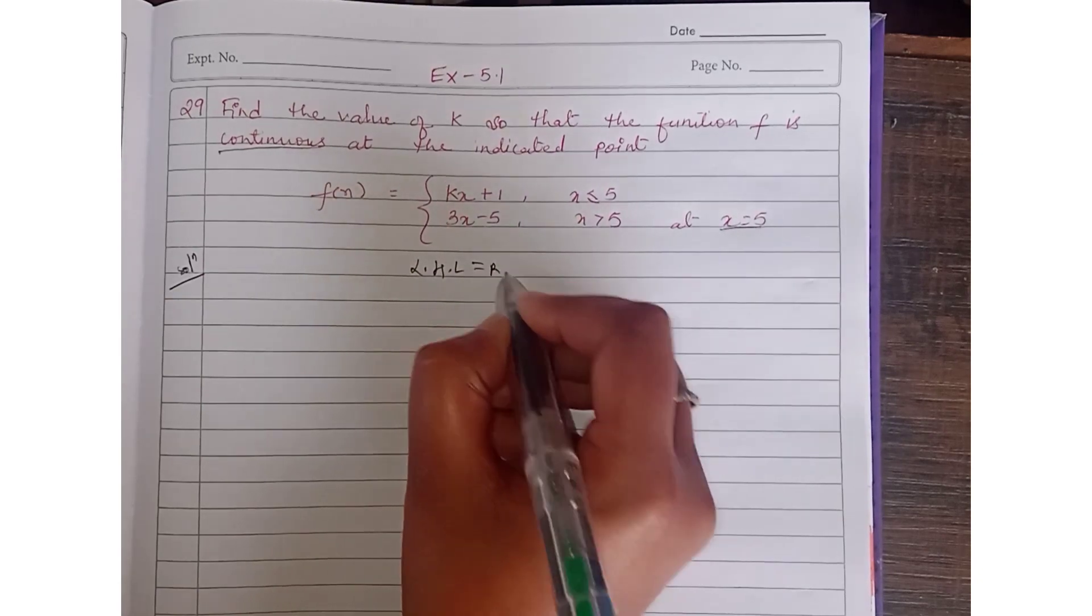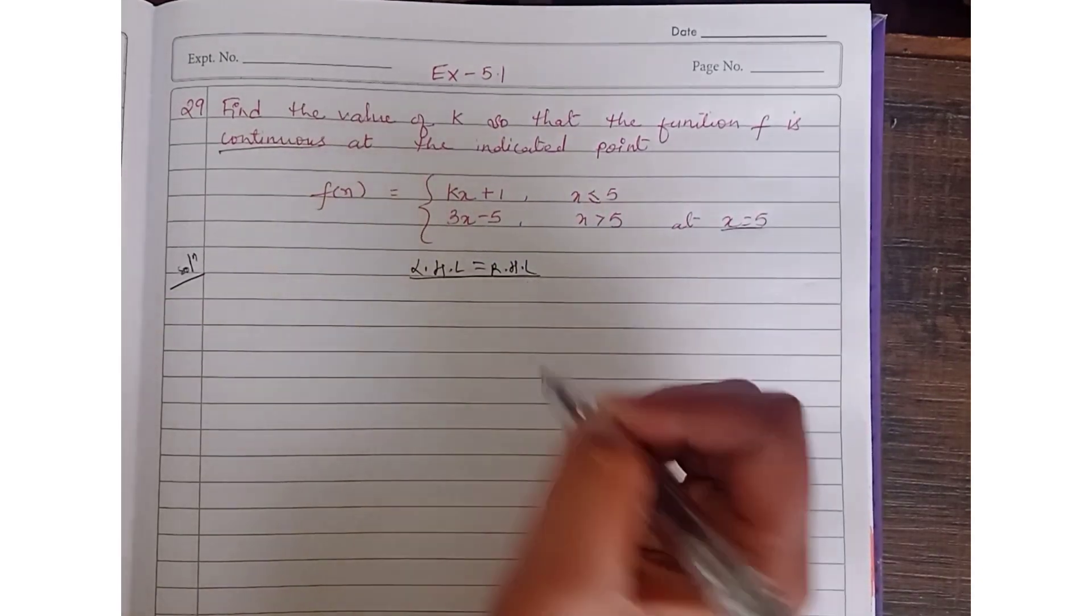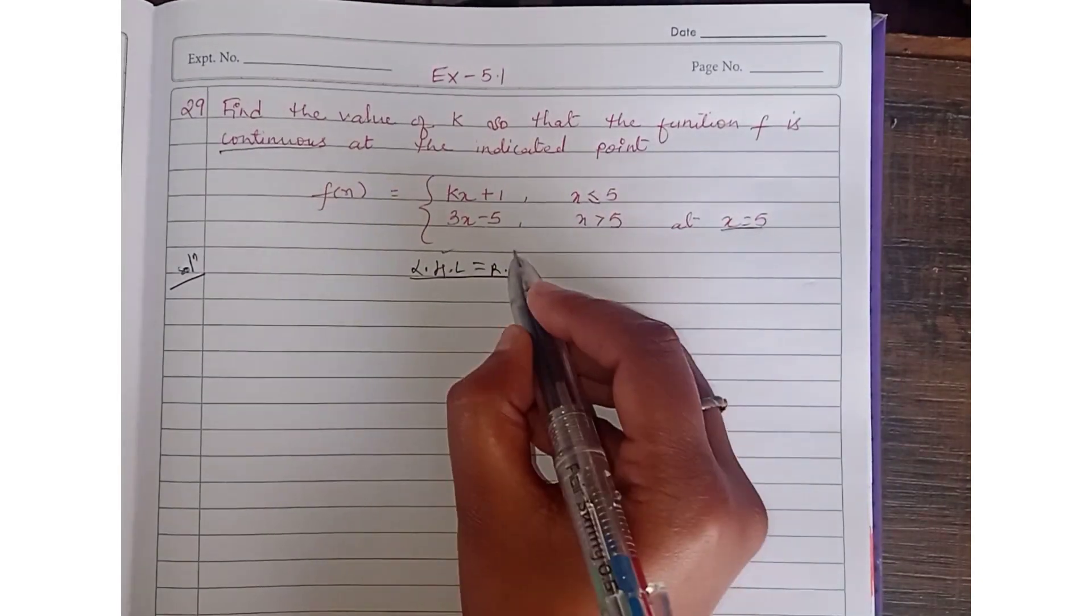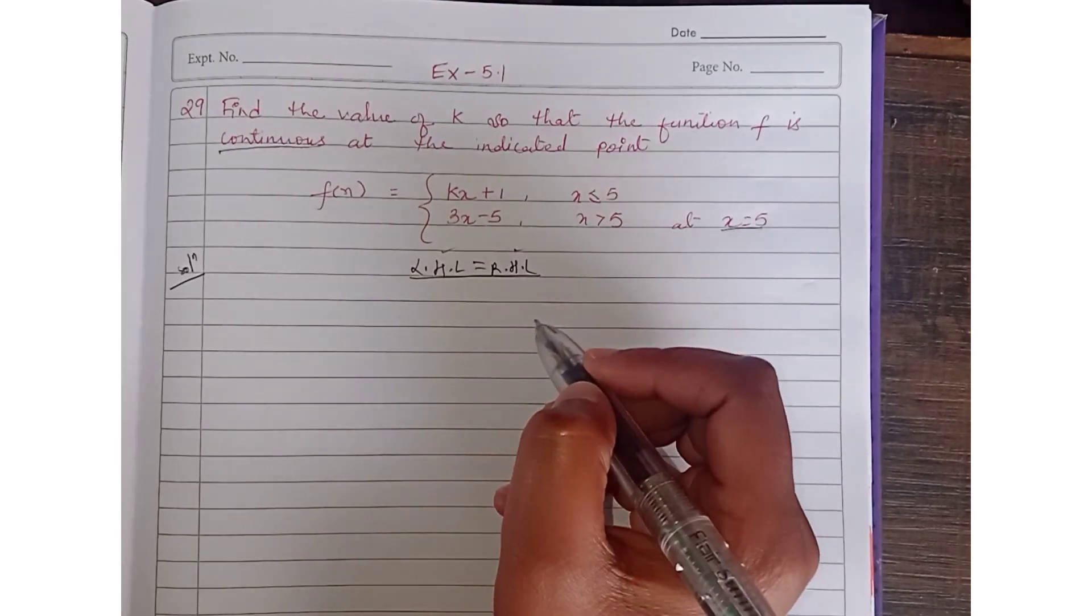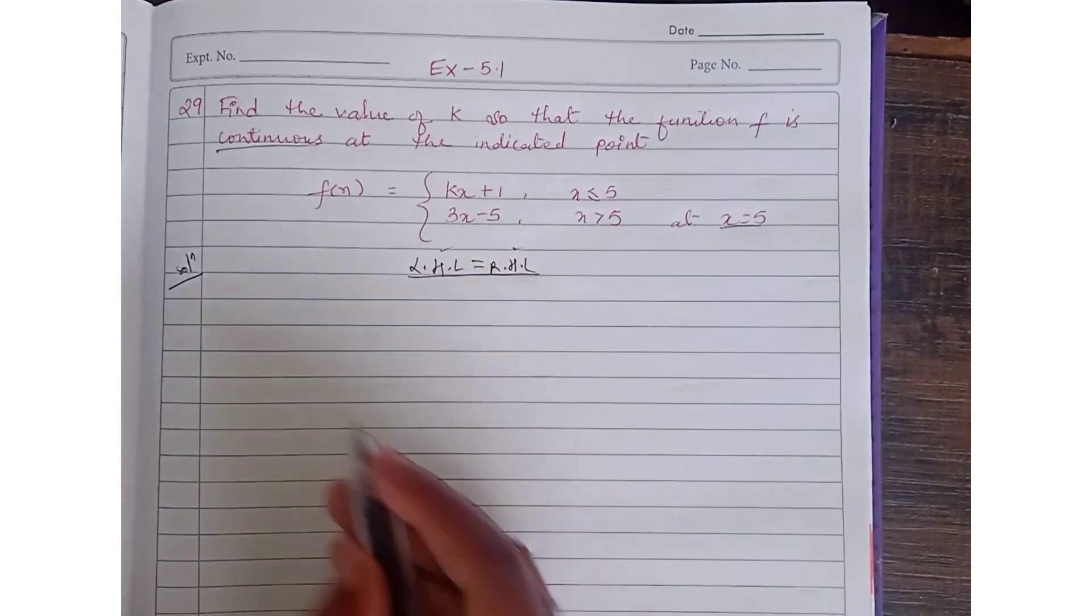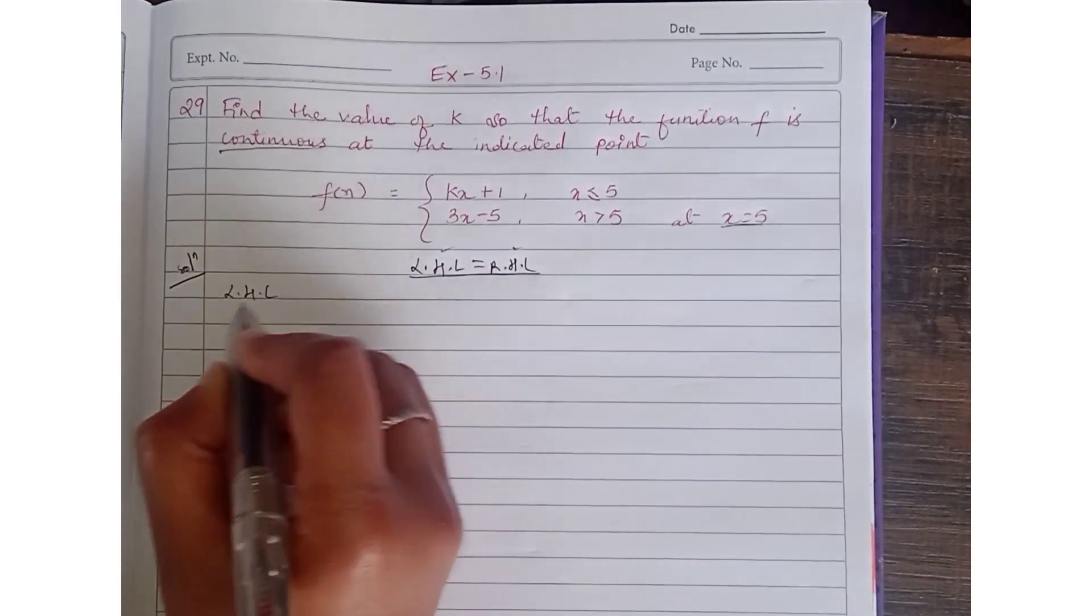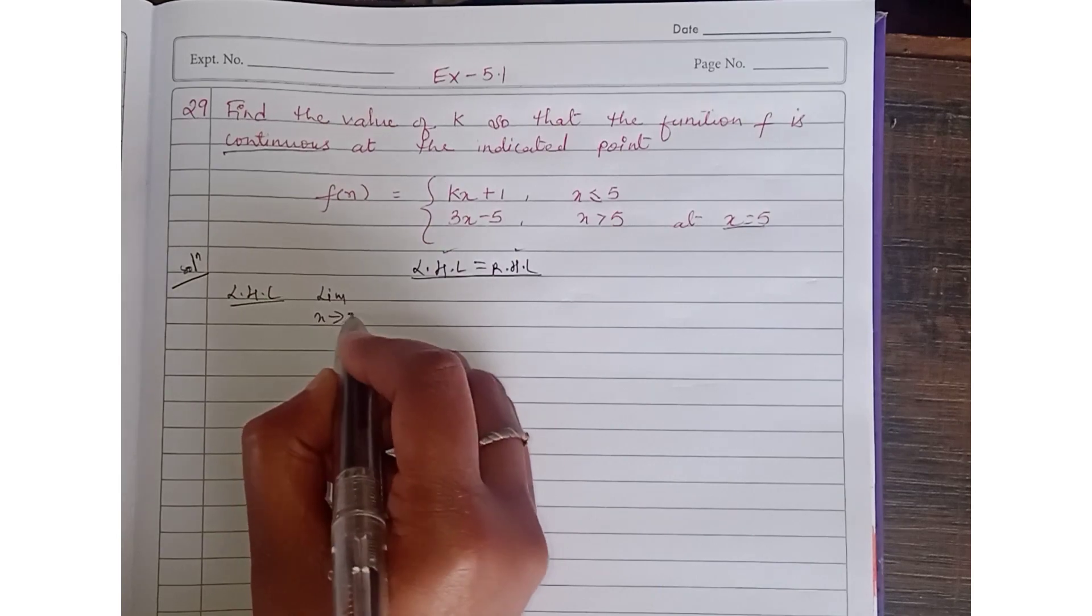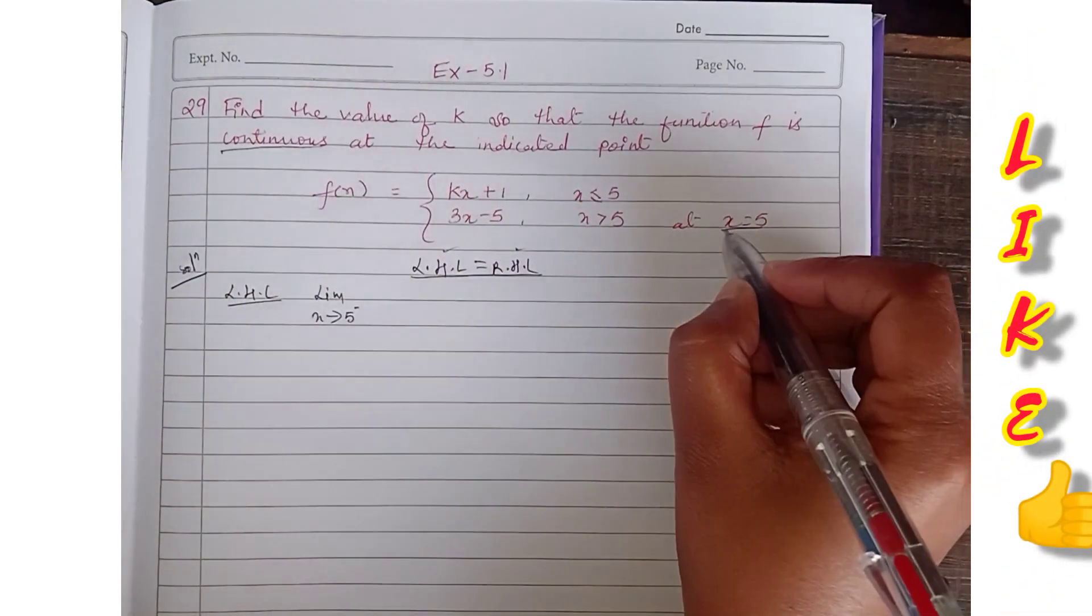So limit x tends to 5 minus, f(x). Why are we doing this? Because x equals 5 and we need continuity. So 5 minus f(x), now limit h tends to 0, f(x) where we have to put 5 minus h.